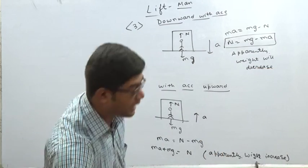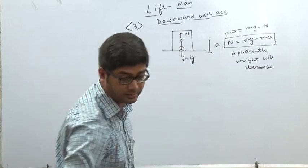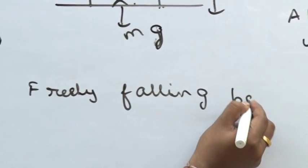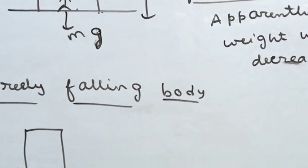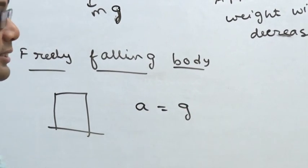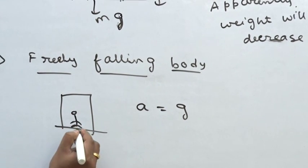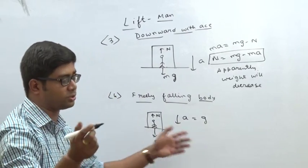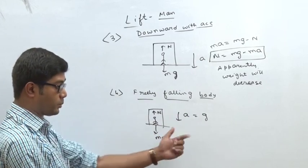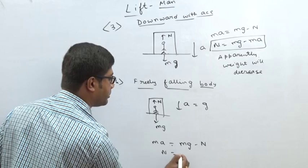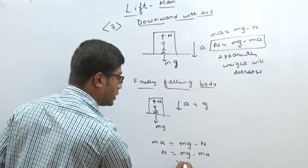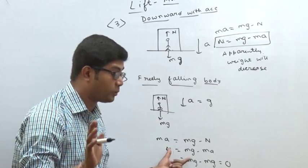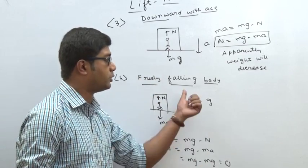Case 4: Freely falling body. For a freely falling body, acceleration equals g. Downward is mg, upward is normal reaction N. Net force downward: mg minus N = ma, and since a equals g, we get N equals mg minus mg equals 0. So apparent weight is 0 for a freely falling body — not actual weight, only apparent weight becomes 0.